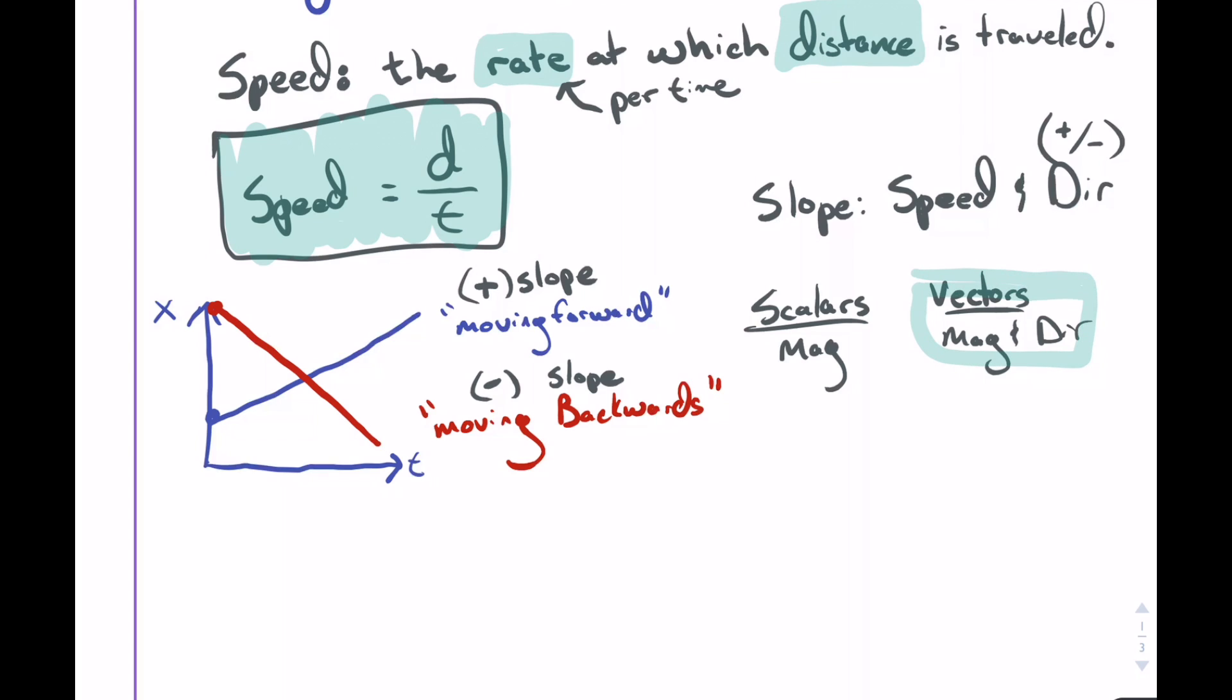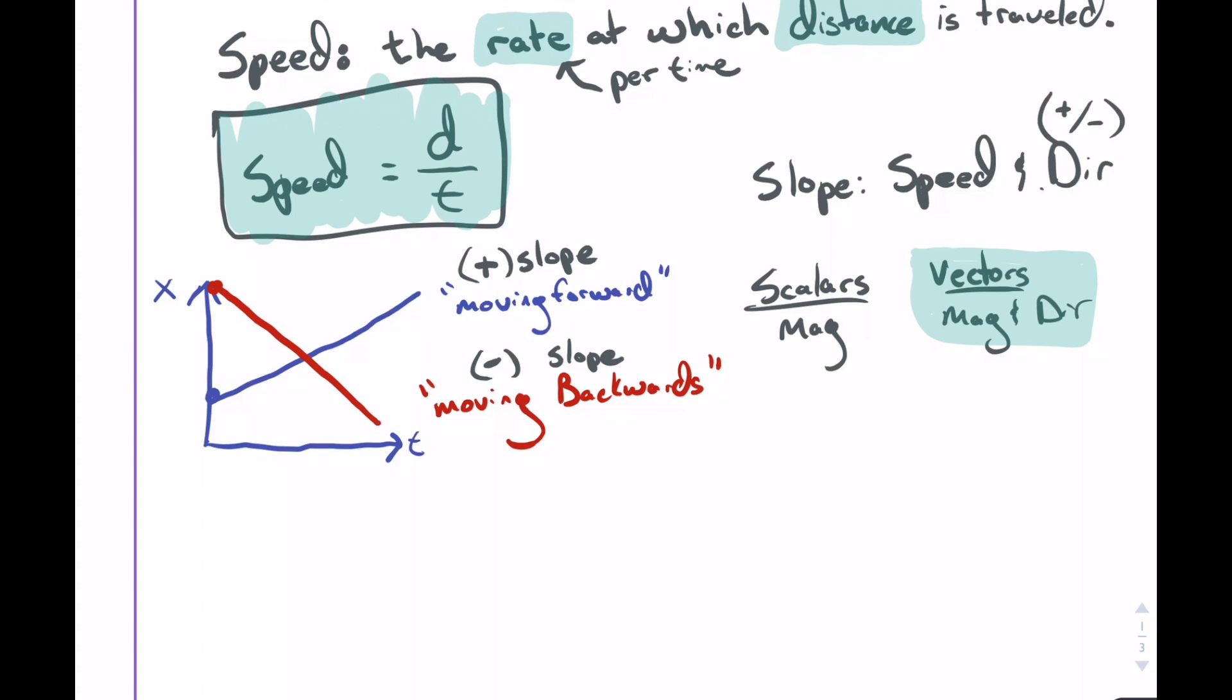Why this is important is if we take a look, the slope is actually giving us information on the position versus time graph. It's falling into the vector category. Because we have this little piece of information about direction, that means the slope really gives us both magnitude and direction.